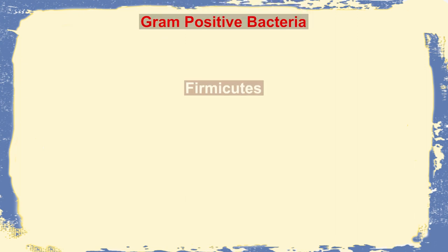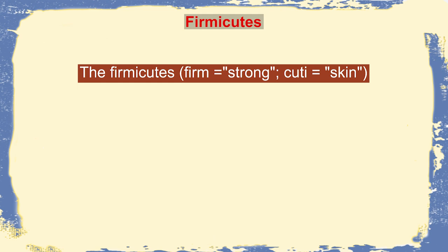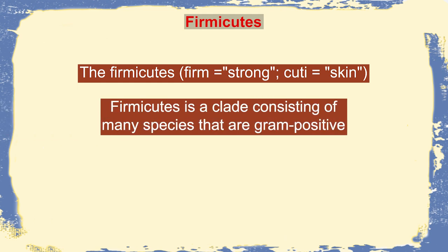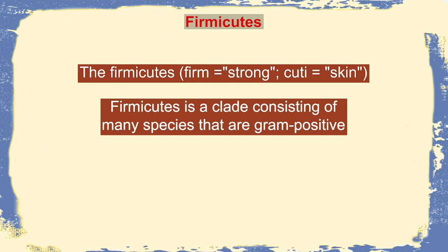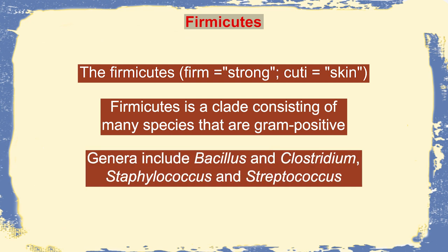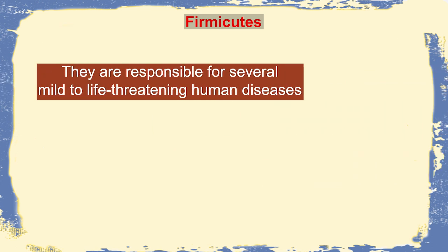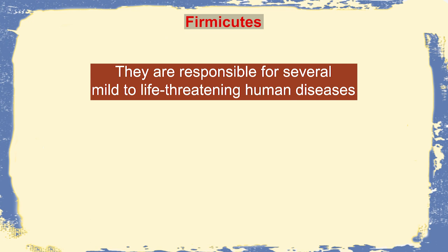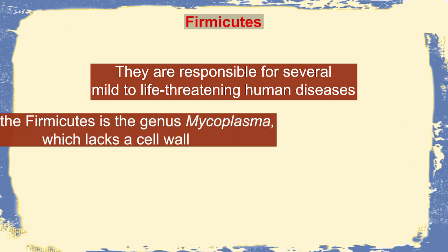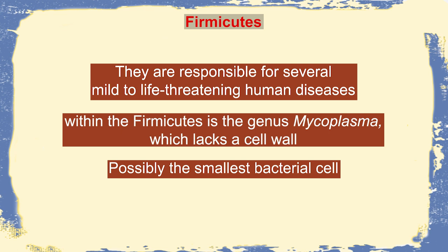Next are the Gram-positive bacteria, which can be divided into two categories: Firmicutes and Actinobacteria. Firmicutes — 'firmis' meaning firm/strong and 'cutis' meaning skin — is a clade of many Gram-positive species, most with low GC content. Genera include Bacillus, Clostridium, Staphylococcus, and Streptococcus. They are responsible for several mild to life-threatening human diseases. Within the Firmicutes is the genus Mycoplasma, which lacks a cell wall and is possibly the smallest bacterial cell.